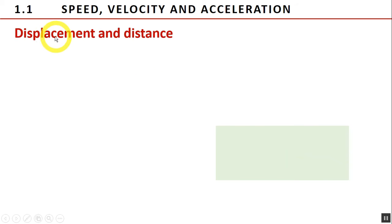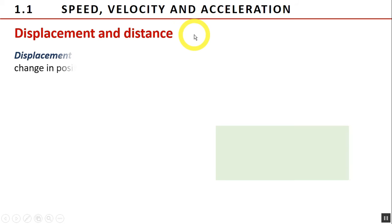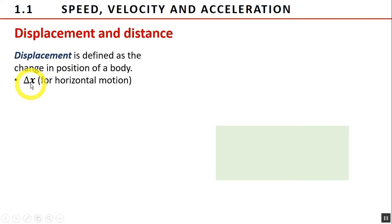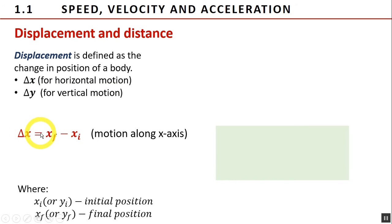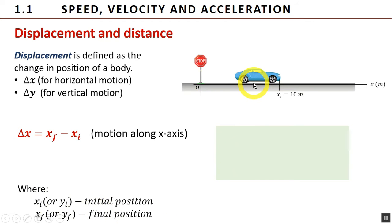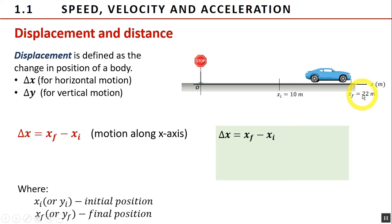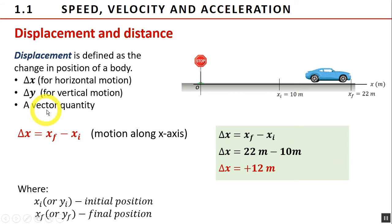Now let us distinguish displacement from distance. Once motion takes place in a body, its position has changed. This change in position is described by the quantity called displacement. In one-dimensional motion, displacement is denoted by delta x for horizontal motion and delta y for vertical motion. Mathematically, it is the difference between the final position x sub f and its initial position x sub i. For instance, a car moves horizontally and changes its position relative to the stop sign — the chosen arbitrary origin — from 10 meters to 22 meters. Applying the formula, its displacement is 22 meters minus 10 meters, which equals positive 12 meters. Take note that displacement is always final position minus the initial position, never the reverse. Displacement is a vector quantity, so it has both magnitude and direction.